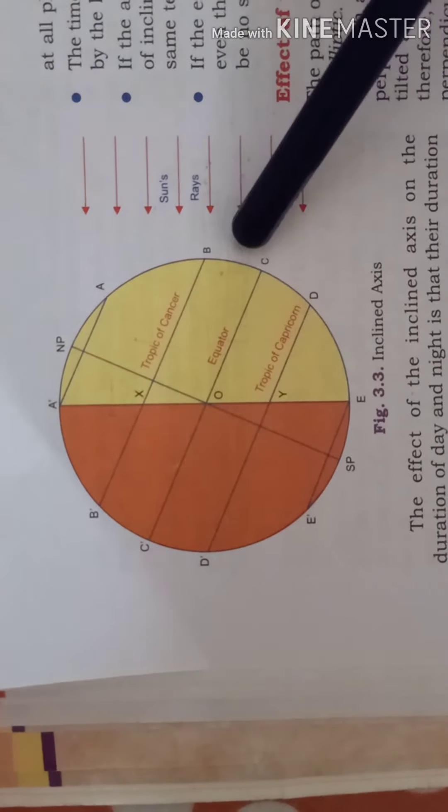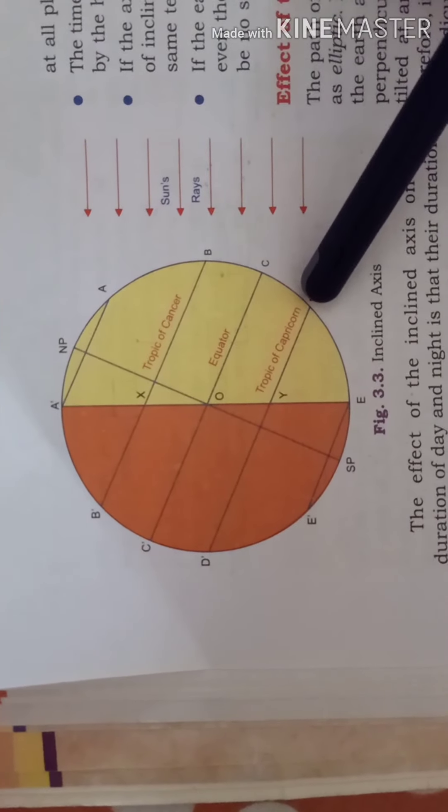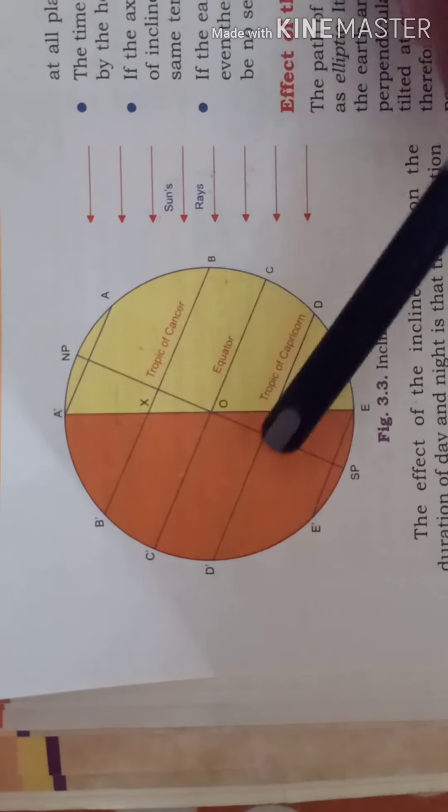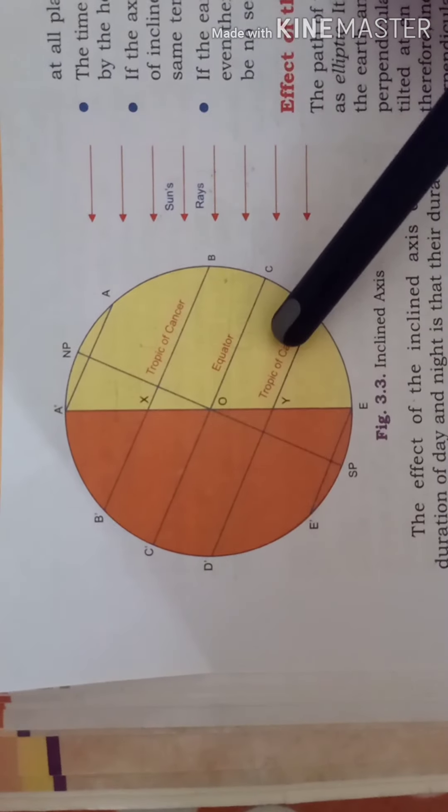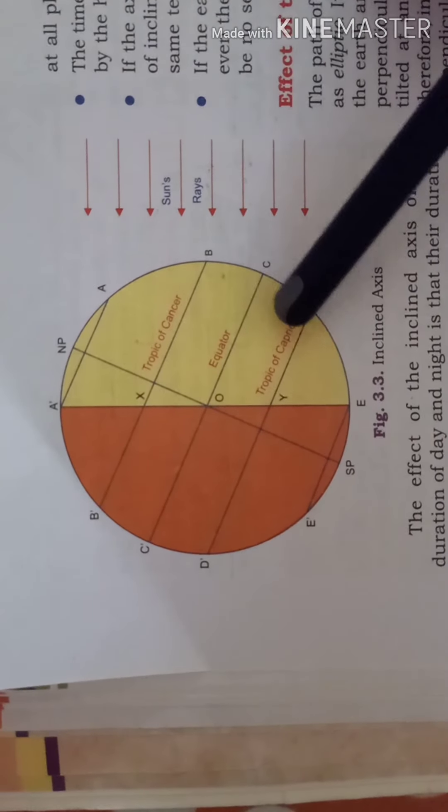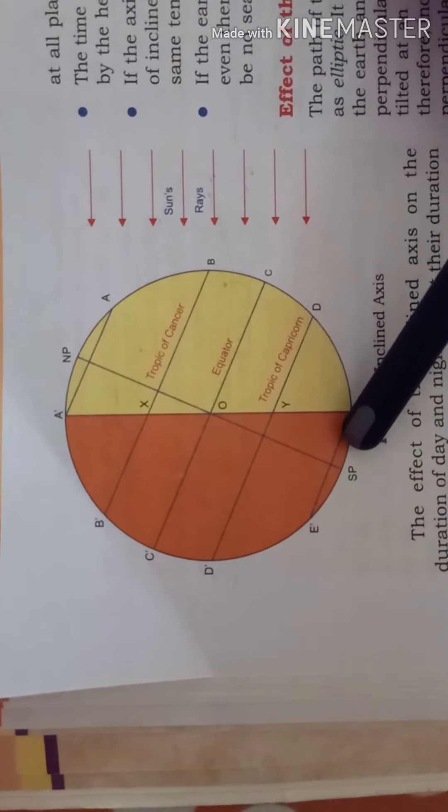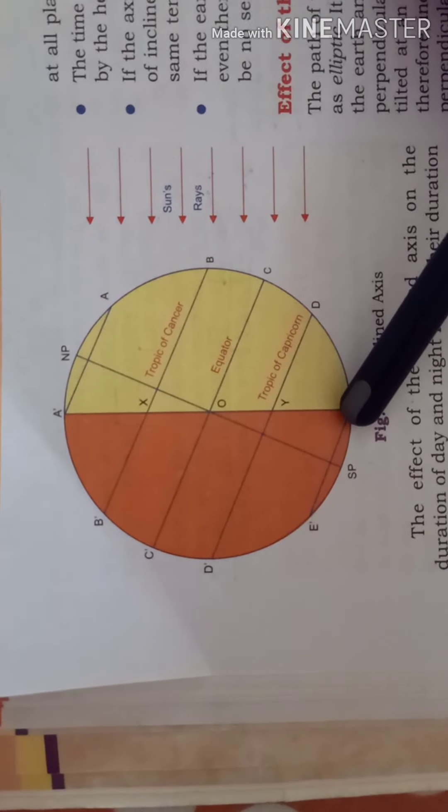Now you come to the southern hemisphere. Over here in the southern hemisphere if you see because it is tilted away from the sun, what happens is that as we start moving towards the south pole the length of the day goes on decreasing.